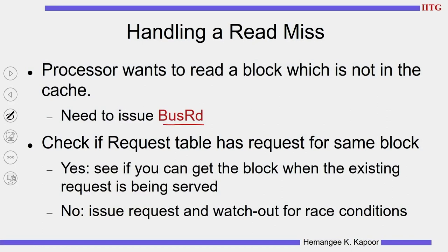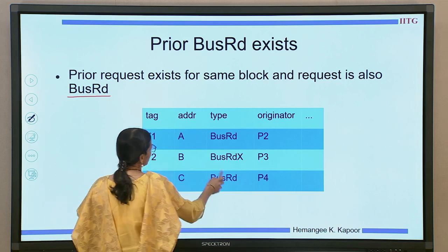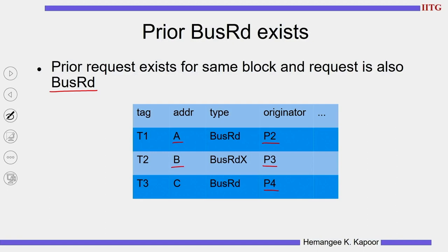We will use the bus read transaction. Before putting the transaction onto the bus, we check the request table to see if a request for this particular block is already present. If the request is present, we take certain actions; if not, we can issue the request while watching for race conditions. The table on the slide is the request table belonging to processor P1, with three entries showing various transactions — bus read, bus read X — originated by different processors on particular data blocks.